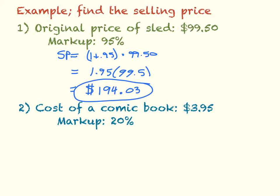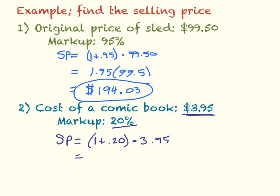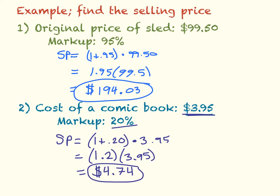For this next example, the cost of a comic book is $3.95 and the markup is 20%. My selling price is going to be equal to 1 plus 0.20 times $3.95, which gives me 1.2 times 3.95. When you type that into a calculator, you get a selling price of $4.74. That would be your final answer.